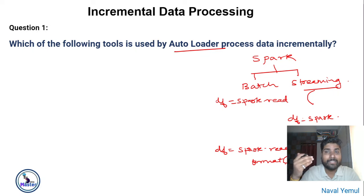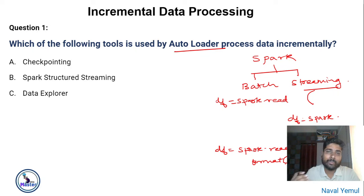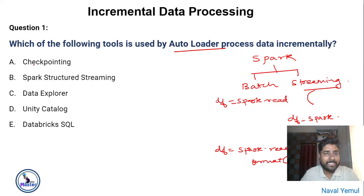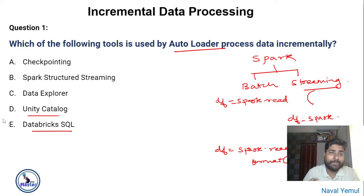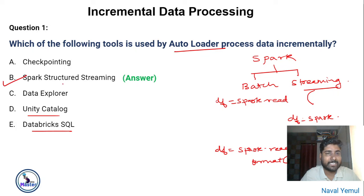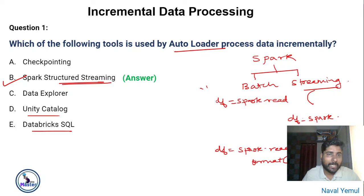So question one asks: which of the following tools is used by Autoloader to process data incrementally? The options include checkpointing, Data Explorer, Databricks SQL, and Unity Catalog. Checkpointing is a concept of Structured Streaming; Data Explorer is a tab in Databricks; Databricks SQL is a data warehouse solution; Unity Catalog is a unified data governance solution. The only correct answer is Spark Structured Streaming, since Autoloader sits on top of it.